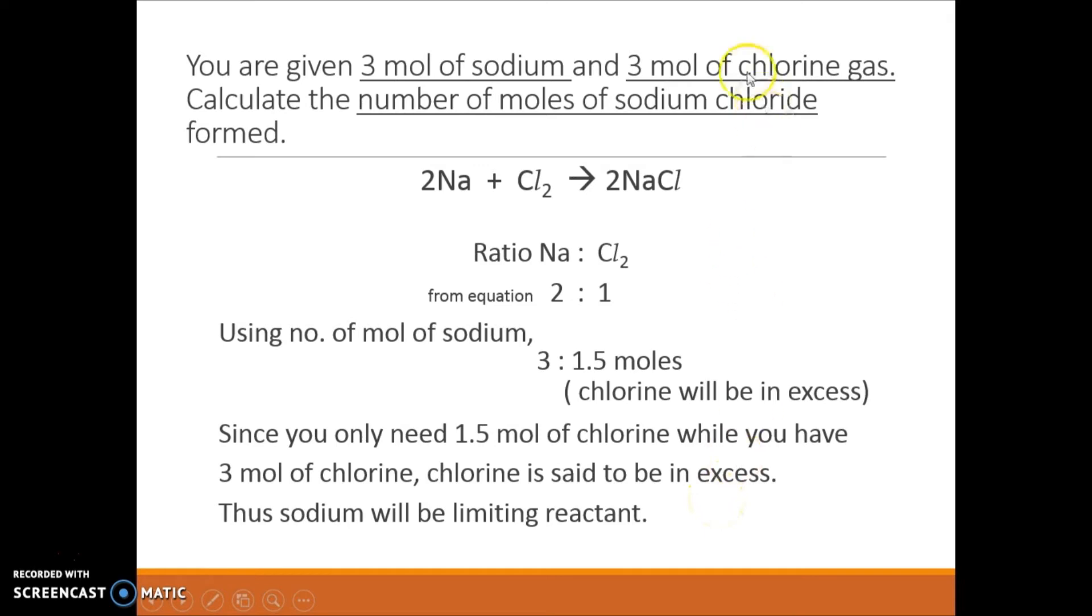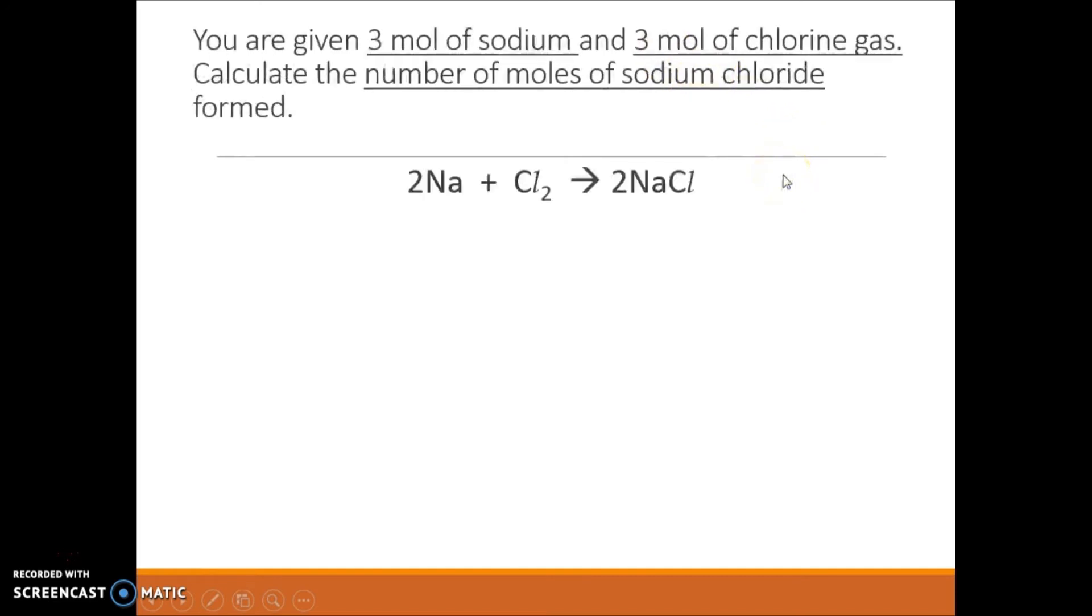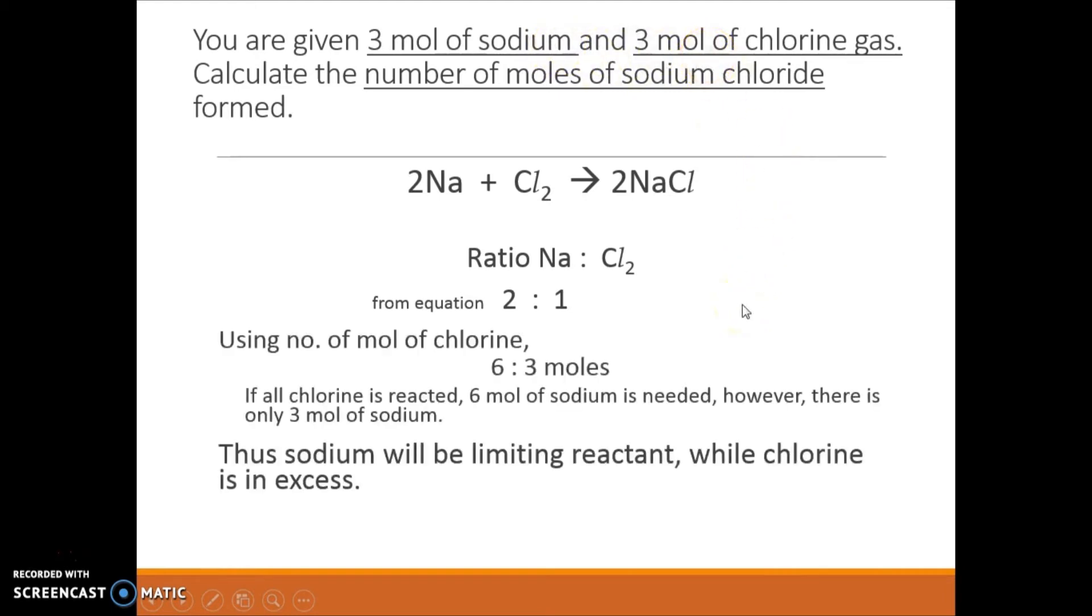What if you have chosen 3 moles of chlorine as your calculation? How will you go about solving? Using mole ratio, number of moles of sodium to chlorine is 2 to 1. So instead of using sodium, if I choose chlorine, then you will find that using chlorine, 3 moles of chlorine will need 6 moles of sodium.